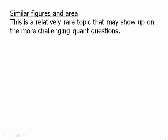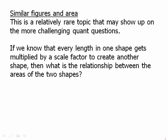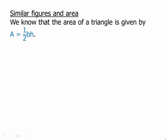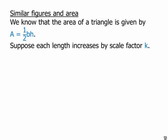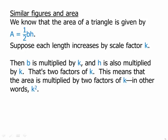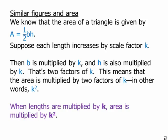Now we'll talk about similar figures and area. This is a relatively rare topic that may show up on more challenging questions — it won't always appear, but it could. If every length in one shape gets multiplied by a scale factor to create another shape, what is the relationship between the areas? The area of a triangle is one-half base times height. If each length increases by scale factor K, then both B and H are multiplied by K — that's two factors of K. So the area is multiplied by K squared. When lengths are multiplied by K, area is multiplied by K squared.